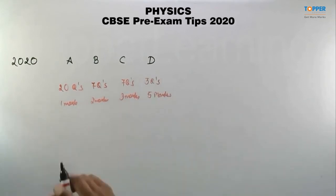Section A has internal choices in two questions. Similarly, for Section B, two questions have internal choices, and in Section C, one question has internal choices. So this is the exam pattern.